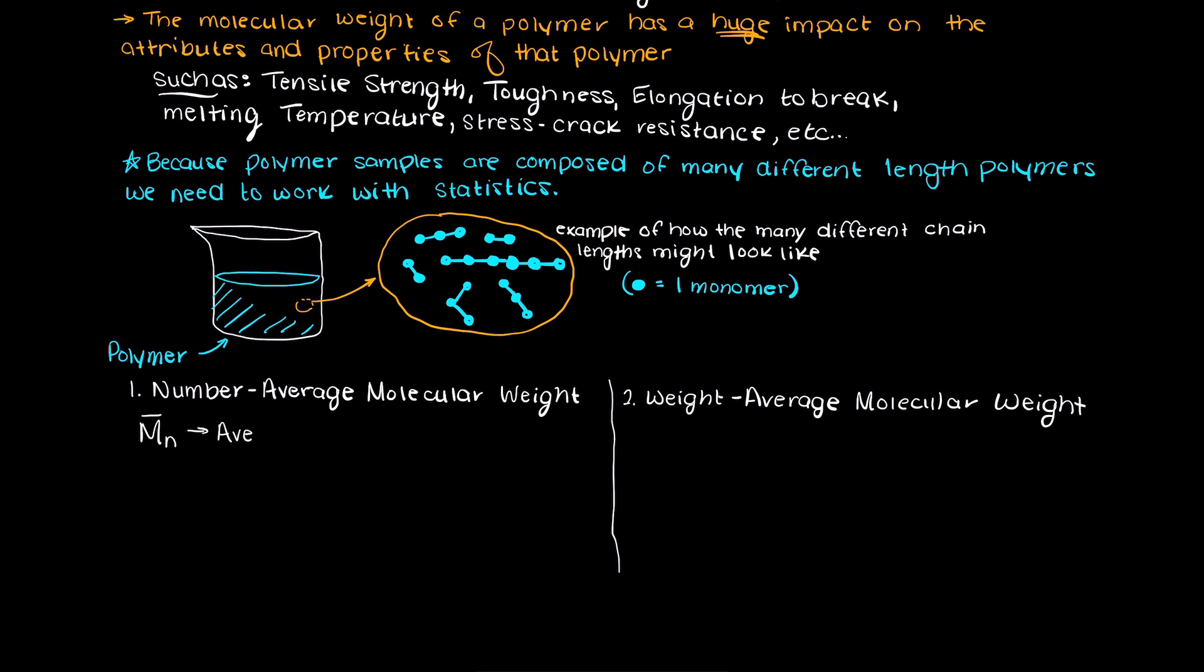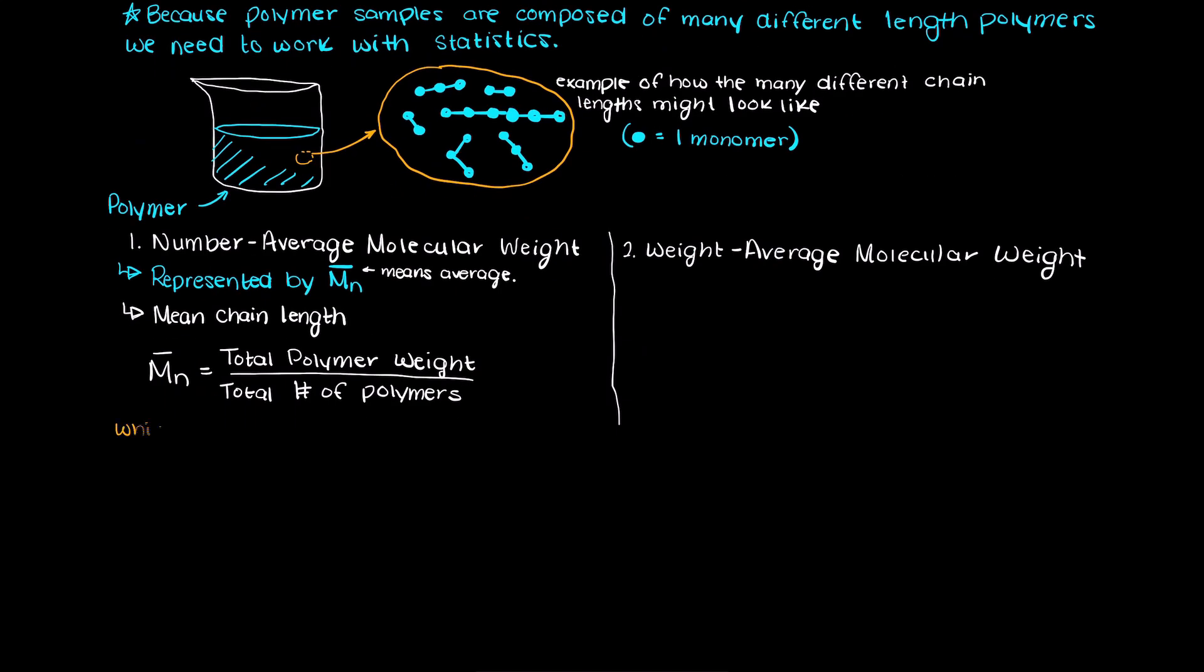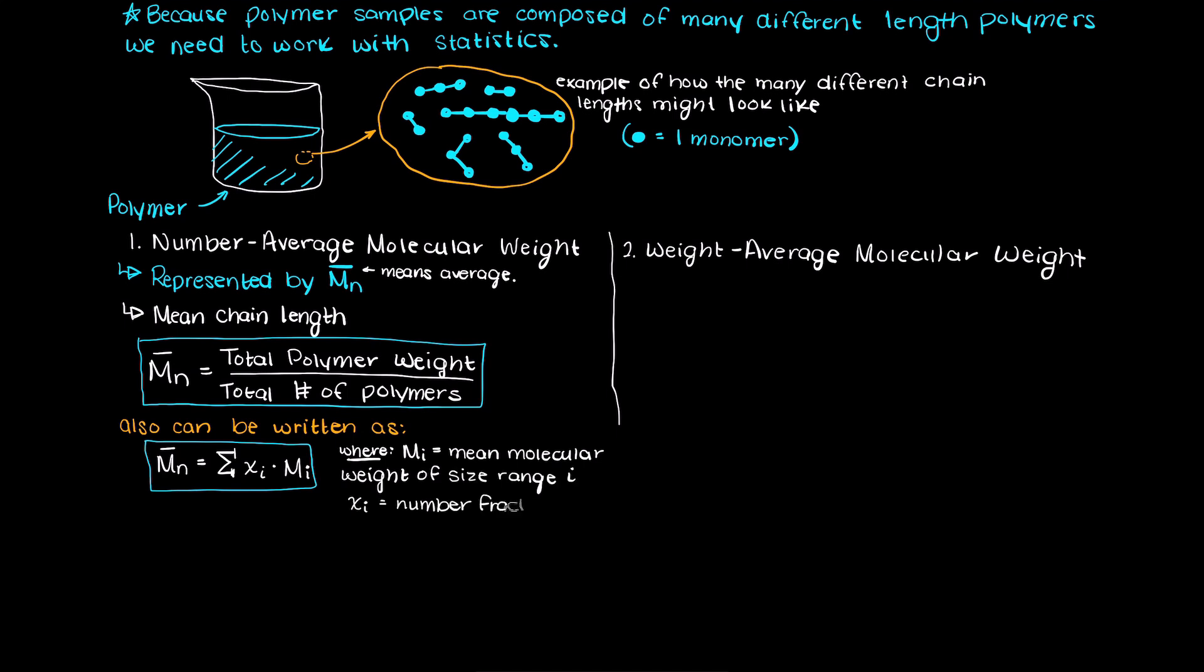The number average molecular weight of a polymer is the average molecular mass, so think of this as the chain length that appears most frequently in your sample. This is calculated as the total weight of the polymer samples divided by the number of polymers in your sample.